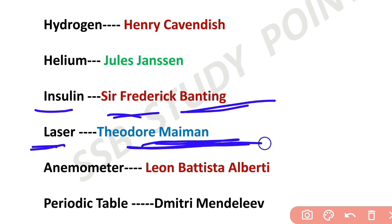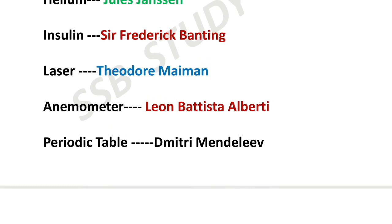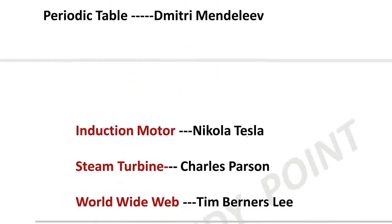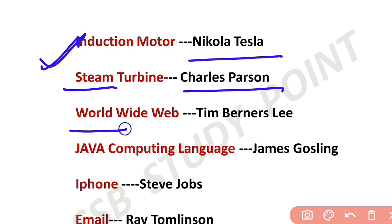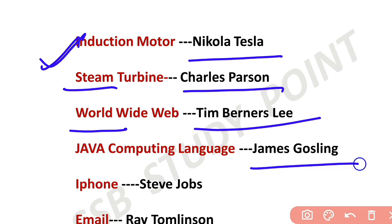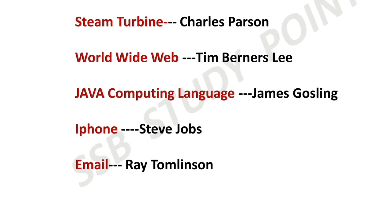The Laser was invented by Theodore Maiman. The Anemometer, used to measure wind speed, was designed by Leon Battista Alberti. The Periodic Table was created by Mendeleev. The Induction Motor was invented by Nikola Tesla. Steam Turbines were invented by Charles Parsons. The World Wide Web was invented by Tim Berners-Lee. Java programming language was created by James Gosling.